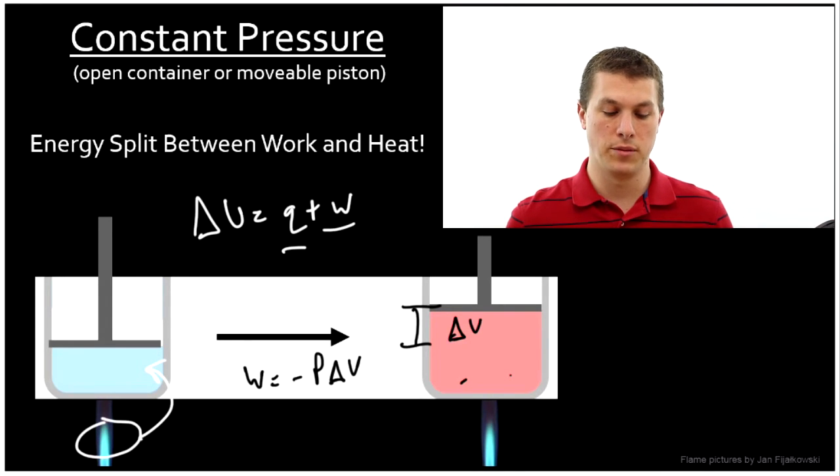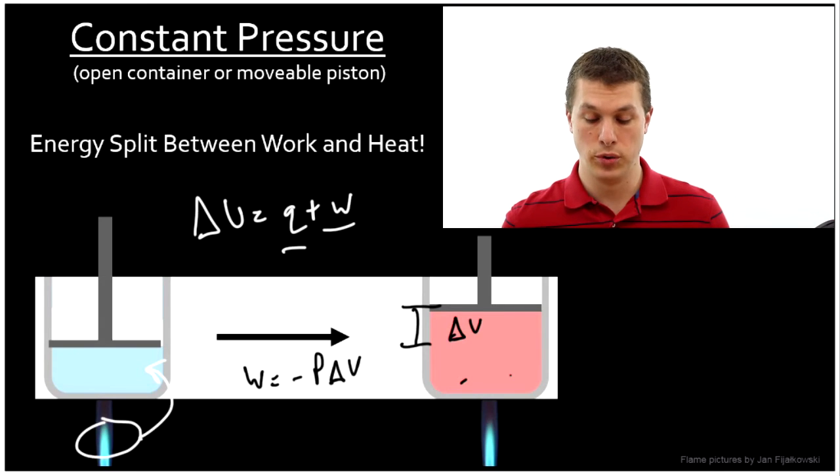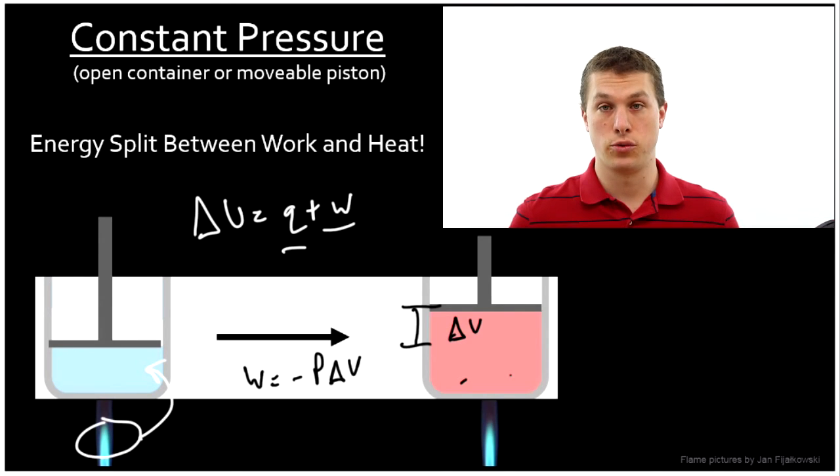Notice this is the conditions we normally measure heat capacity at. A closed container, basically the only time you do that is something like bomb calorimetry. But most of the time in the lab when you're running an experiment, you're going to be at constant pressure anytime you have an open container. And that means whenever we heat something, that heat is split between doing work, that is expanding the gases, and increasing the temperature of our system. So two different conditions under which we can apply heat, constant pressure and constant volume.